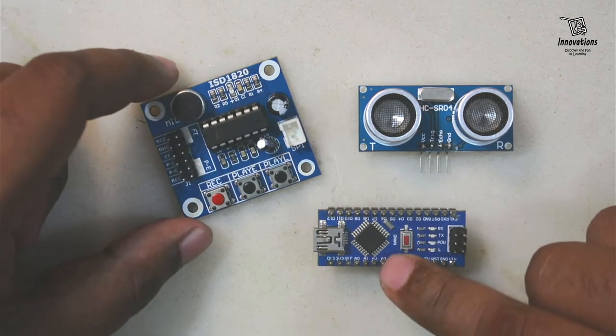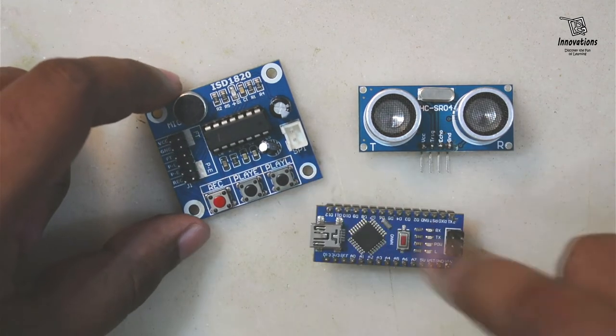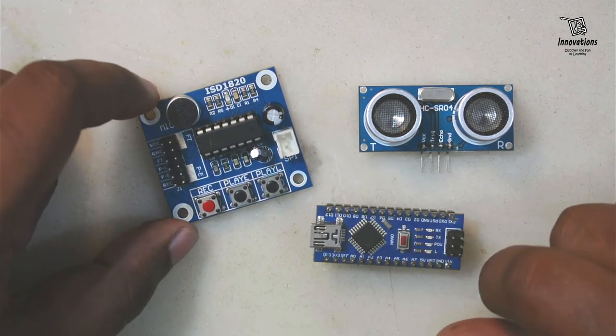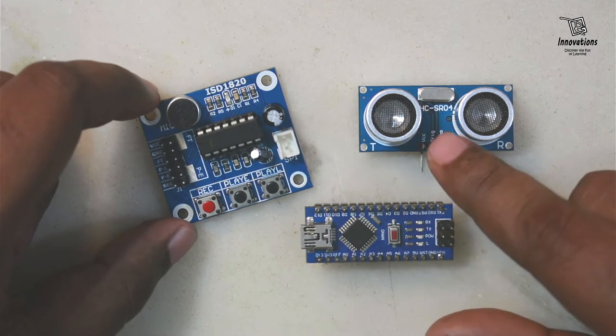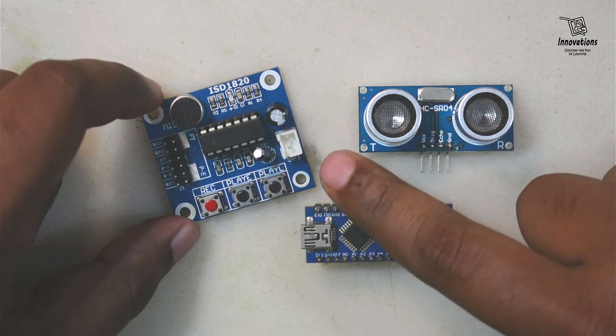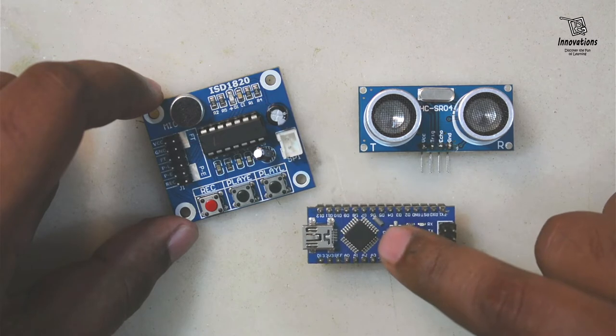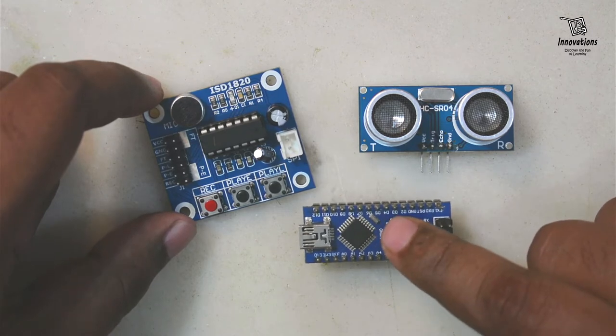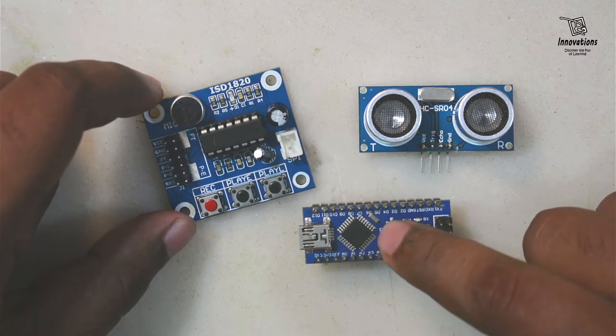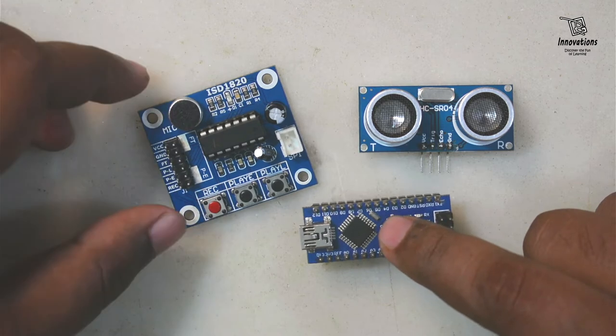Here I will use an Arduino Nano to bridge these two modules. So in today's project, I will show you how you can interconnect an ultrasonic module with an ISD1820 module via an Arduino. You can use any Arduino board available with you: Arduino Uno, Arduino Pro Mini, or Arduino Lilypad.